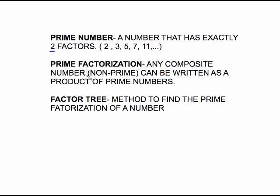Prime has two factors. The prime factorization of a number, any composite number, which is a non-prime number, can be written as a product of prime numbers. And a factor tree is a method to find the prime factorization of a number.